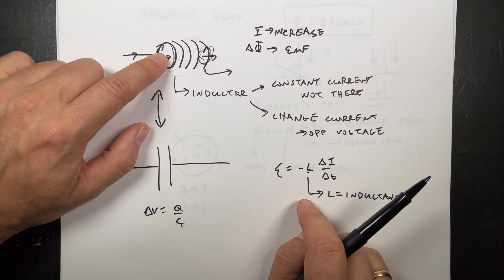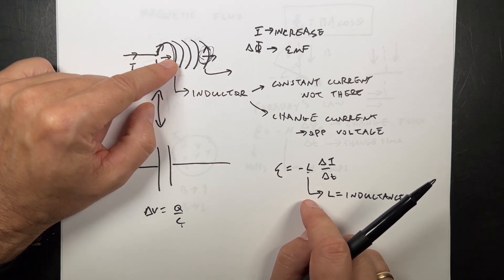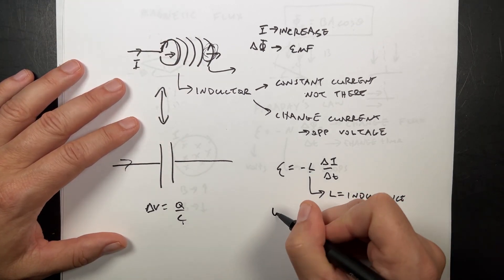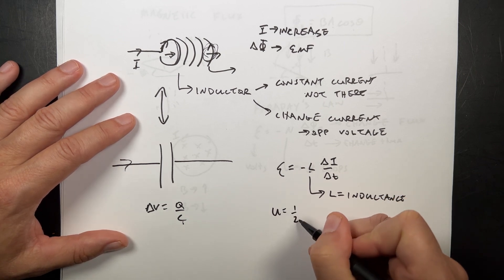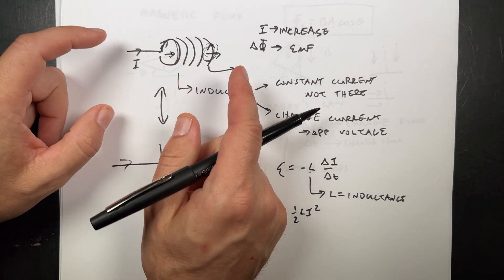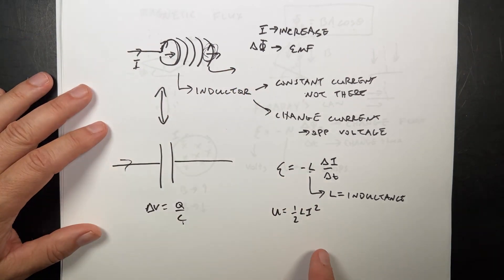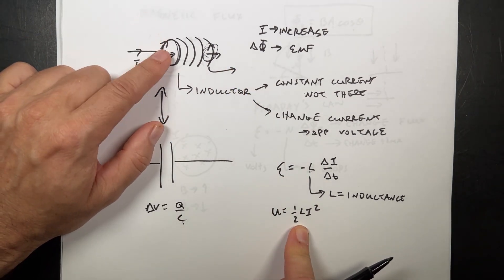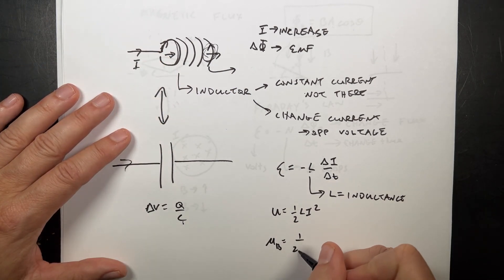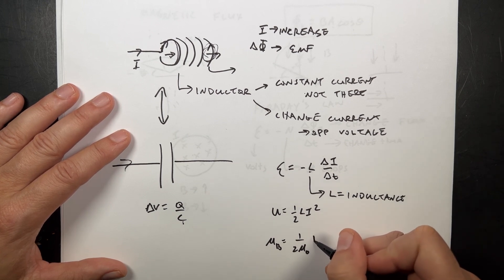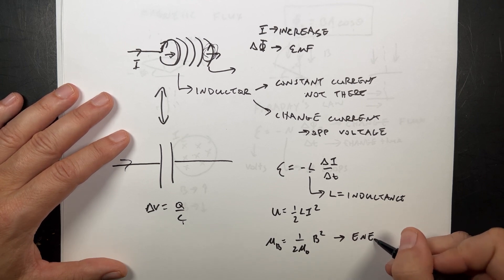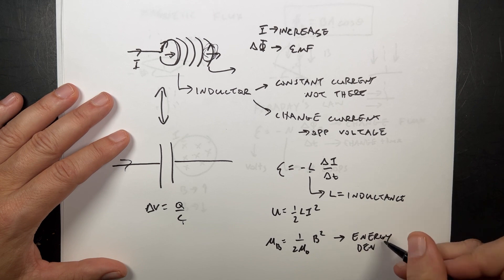The other cool thing is that we already talked about the inductor making a constant magnetic field. So, it turns out that because I can change the current and it will make a voltage, I can store energy in an inductor. U equals one-half L I squared, because if you have a large current going through this, and you turn it off, you get an extra voltage. Where does that come from? It comes from the energy stored in there. And then if I consider that as energy stored in the magnetic field, I get this. Mu B is 1 over 2 mu naught B squared. And this is the energy density in the magnetic field. It's the energy per unit volume.